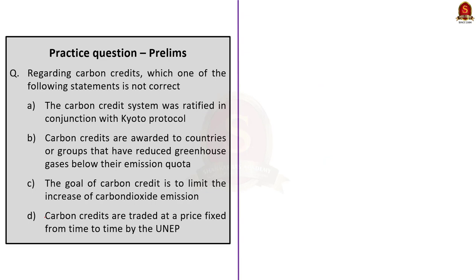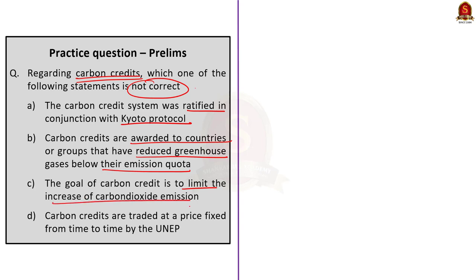Moving on to the fourth question regarding carbon credits: which one of the following statements is not correct? Option A: the carbon credit system was ratified in conjunction with the Kyoto Protocol. Option B: carbon credits are awarded to countries or groups that have reduced greenhouse gases below their emission quota. Option C: the goal of carbon credit is to limit the increase of carbon dioxide emission. Option D: carbon credits are traded at a price fixed from time to time by UNEP. The incorrect statement is option D — all other statements are correct. So the correct answer is option D.